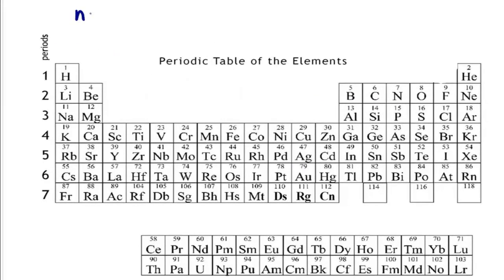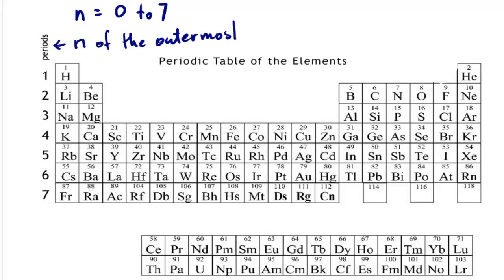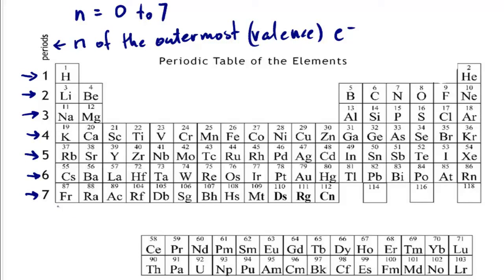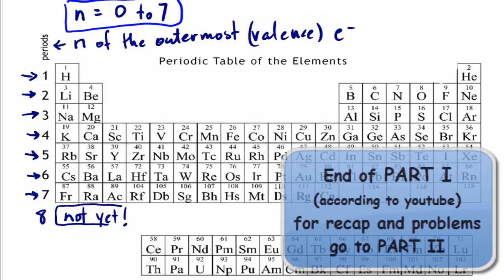Why is the principal quantum number limited to integers between 1 and 7? If you look at the periodic table, the periods are numbered and represent the principal quantum number of the outermost — valence — electrons. Given the number of elements on the periodic table, we can't go higher than 7. Each period number represents where the outermost electrons are for elements in that period, and there are no elements with outer electrons at principal energy level 8. Therefore, n is confined to integers between 1 and 7.